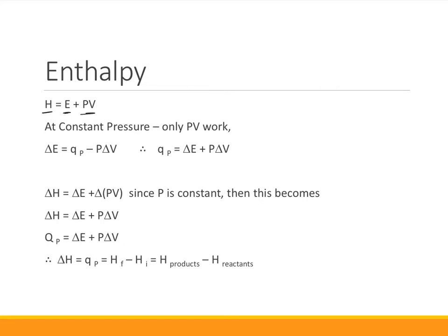If we have constant pressure and only PV work, then we've seen before that ΔE is equal to Qp, the heat at constant pressure, minus PΔV. Therefore, Qp is equal to ΔE plus PΔV.